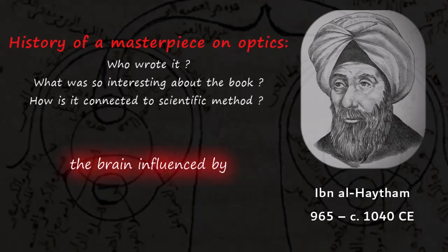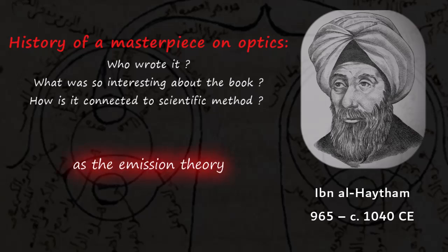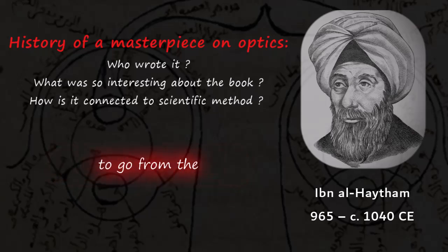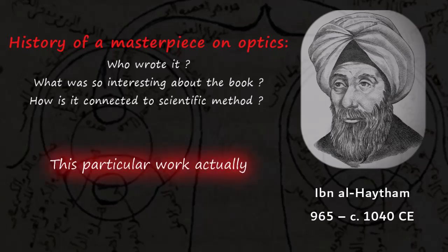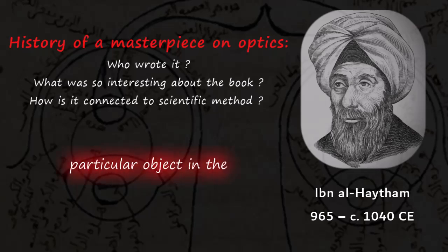The book also argued that vision occurs in the brain, influenced by personal experience. This was a deviation from the prevailing emission theory, which held that light had to go from the eye onto the object — that is how vision was created. This work showed instead that light has to come from outside into the eye, and then there is a perception of that particular object in the form of vision.